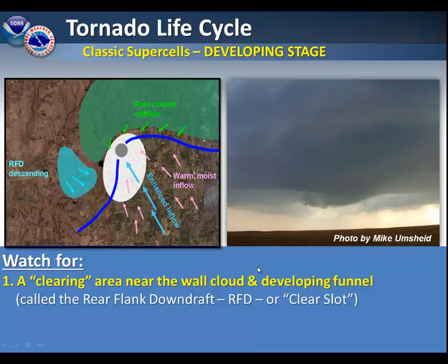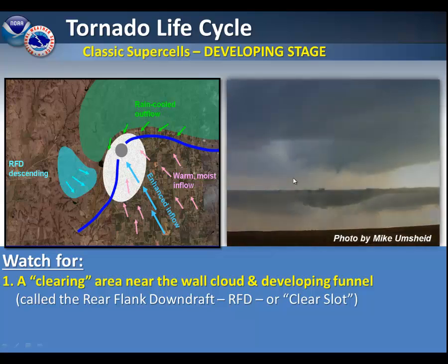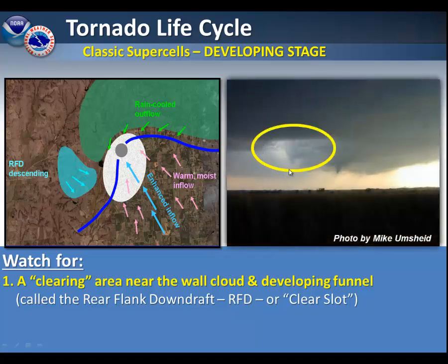When spotting a classic supercell, watch for a clearing area near the wall cloud and a developing funnel cloud. This is called the rear flank downdraft, or what we call an RFD, or clear slot. On the images on the right, you can see this forming. Here is the clear spot up here, and here is the funnel cloud that is forming.